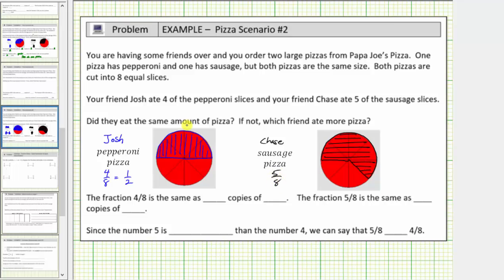Now the answer to the question should be pretty obvious, but let's focus on the meaning of the fractions four-eighths and five-eighths. The fraction four-eighths is the same as four copies of one-eighth. The fraction five-eighths is the same as five copies of one-eighth.